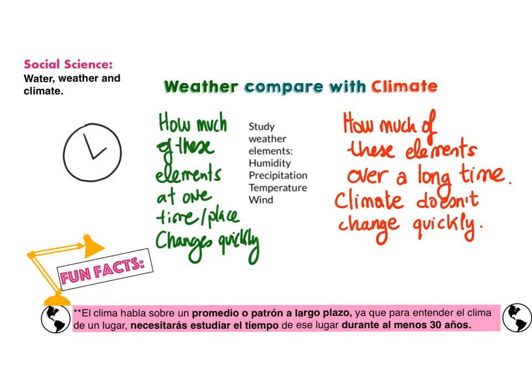As you have experienced, weather changes really, really quickly. One minute it's really sunny and we enjoy the sun, and the next minute — bad luck — suddenly it's raining again and you see a storm.